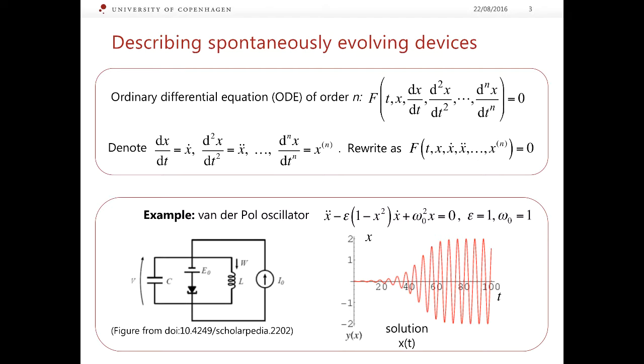You can immediately see that this equation is non-linear because of the term x squared multiplied by x dot. Here ε and ω₀ are some parameters. In the right-hand side of this slide, a red line shows the solution of this equation obtained numerically.